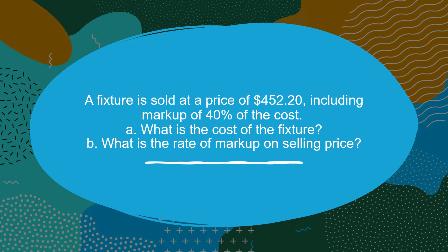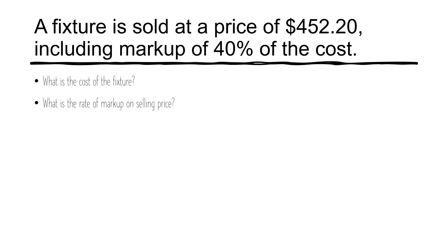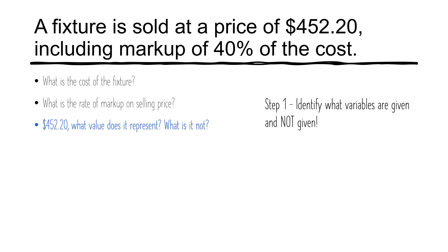So how do we approach this? The first step is to identify what are we given. What do these values, or in this case a percentage, mean? What does it not represent? We can see that $452.20 is a dollar amount given in the question. Is it the selling price, the cost, the profit, the expense? It turns out that the wording 'sold at a price of $452.20' represents a selling price. So the selling price is equal to $452.20.